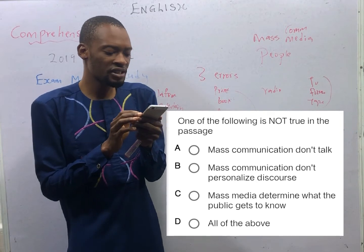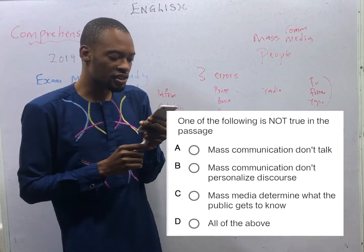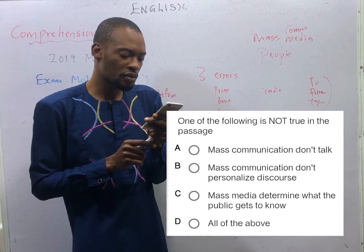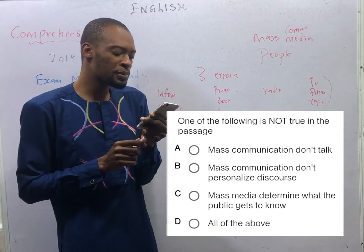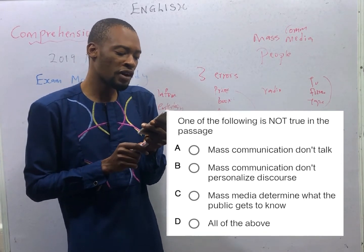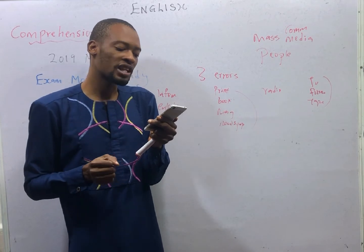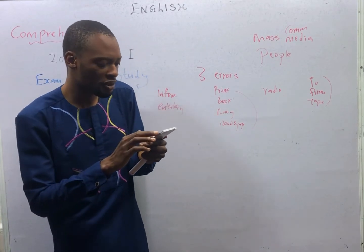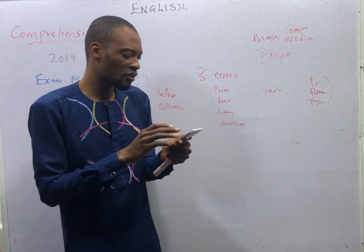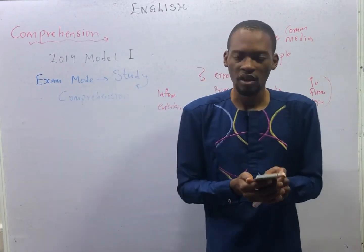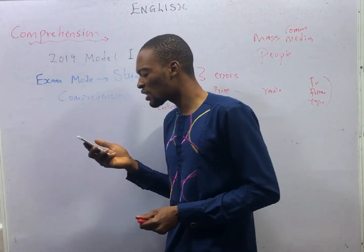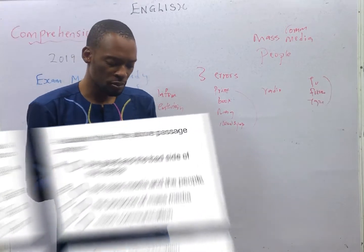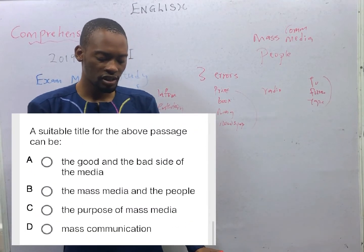The mass media have in recent times come under assertive criticism. Many presenters have not only become conscientized but also immensely concerned about the possible effect that signs of violence and bad behavior may have on their children. More worrisome are the potential danger of political and commercial propaganda. From the passage, we can see that the explicit title for the passage is mass media and the people — its effect on the people — making option B the correct option.